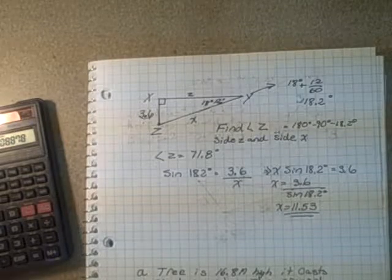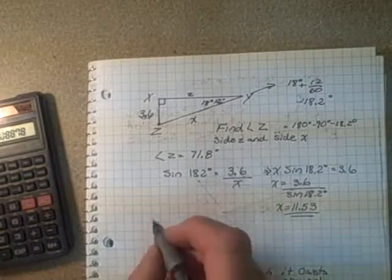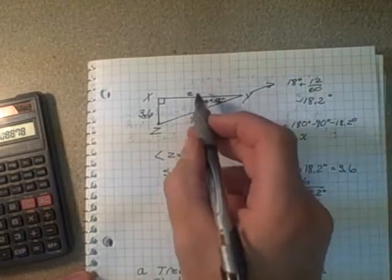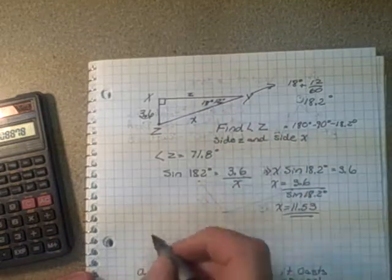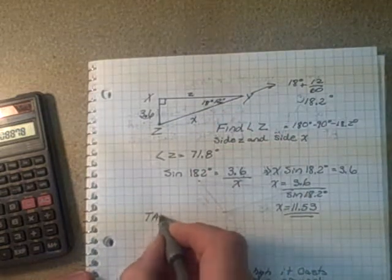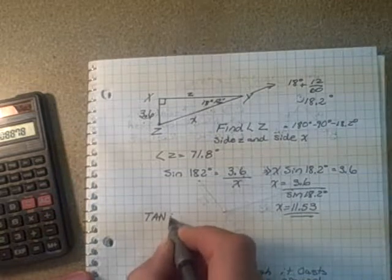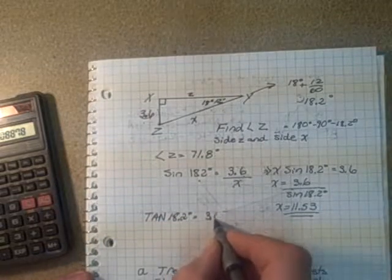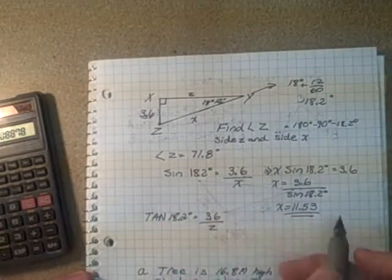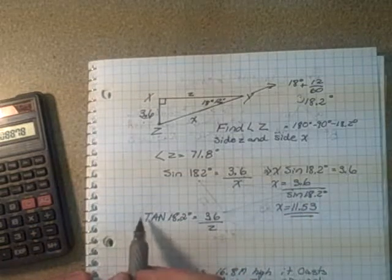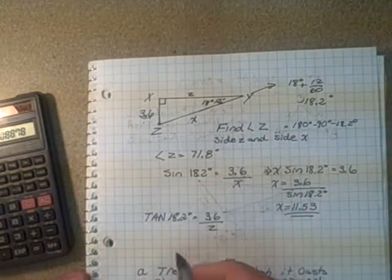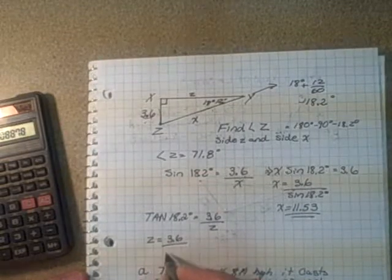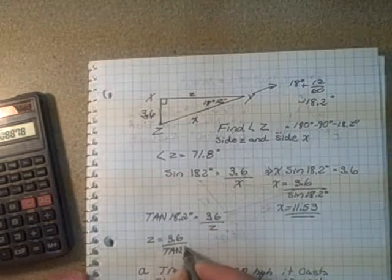And we can do a similar exercise in calculating the Z value. We can say that Z is actually the adjacent side. So opposite over adjacent is tangent. So tangent of 18.2 degrees is equal to opposite 3.6 over Z. We can now rearrange it similarly like we did here, multiply by Z and then divide by tangent 18.2. So then we are going to get that Z is equal to 3.6 divided by the tangent of 18.2 degrees.